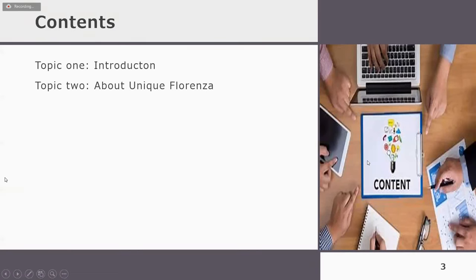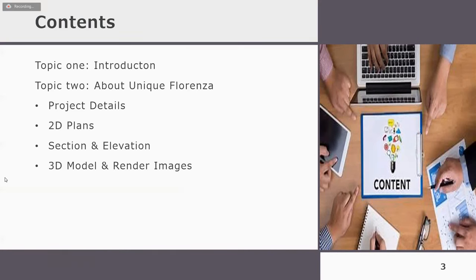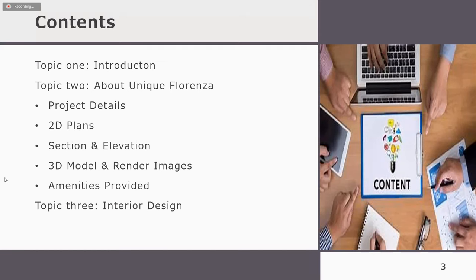The contents included are: Topic 1 - Introduction; Topic 2 - Unique Florenza, with subtopics covering project details, 2D plans, section elevation, 3D model and render images, and amenities provided; and Topic 3 - Interior design.